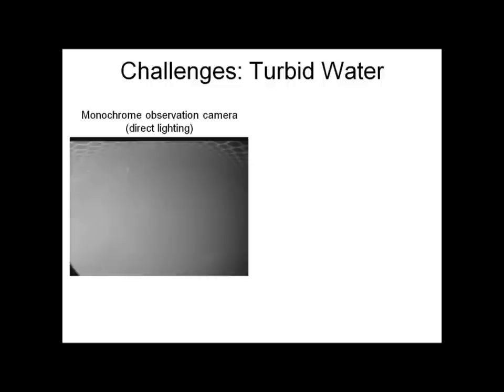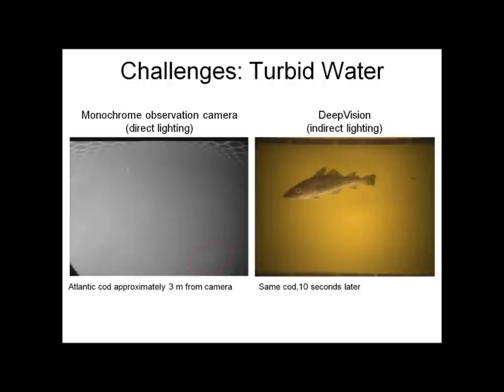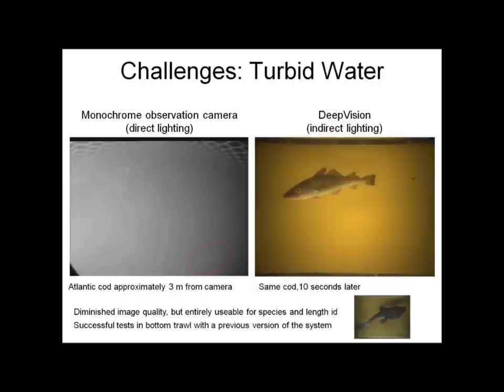A bit about the challenges. The first question anyone asks is: what happens when the water is not clear and you're relying on images? It's actually not as big a problem as we thought. This example image from a monochrome camera with direct lighting shows a blob in the lower right-hand corner that is in fact a cod, which I know because 10 seconds later it passed through our system. The major difference is that we're using indirect lighting, so we're not illuminating the particles in the water nearly as much, and we're still able to get very usable images — certainly a little diminished in quality, but we can identify it as Atlantic cod and do a length measurement. We have in fact used the system in bottom trawl and gotten good images as well.